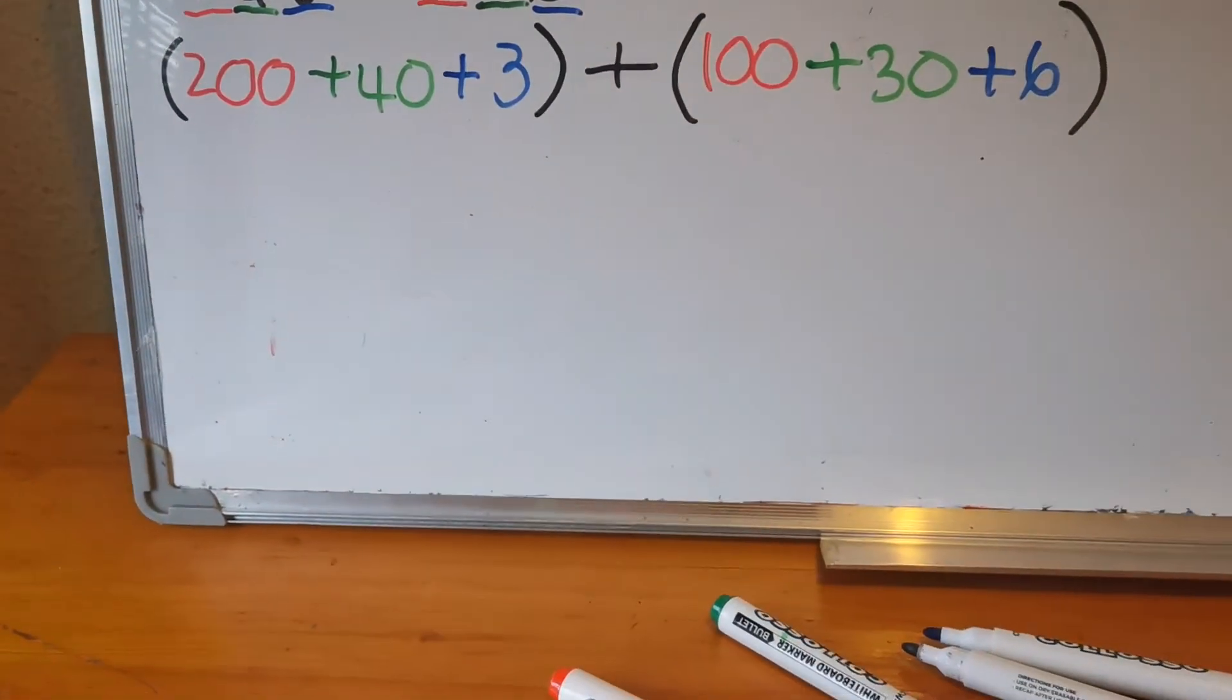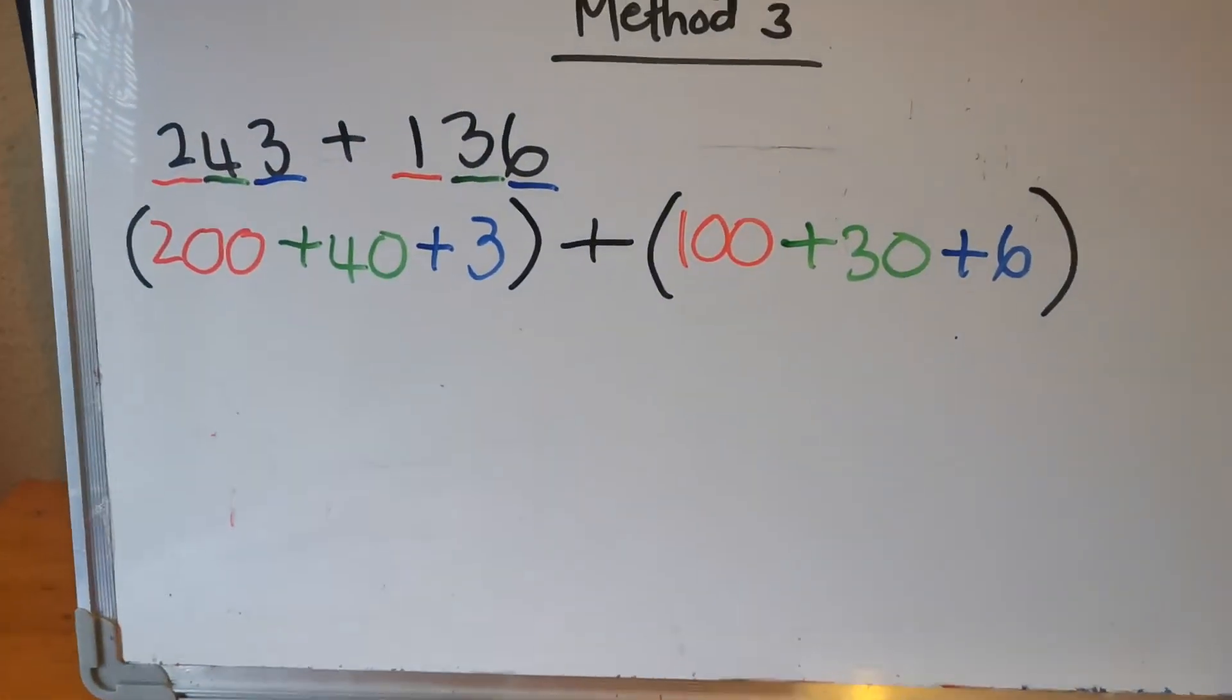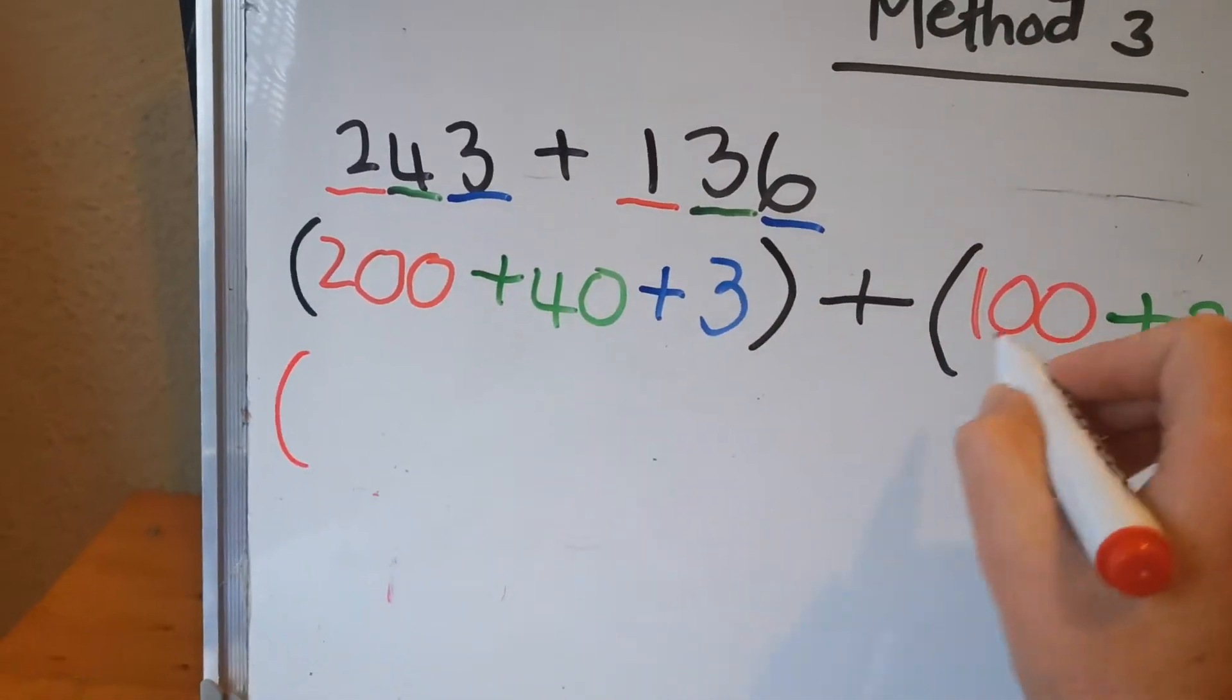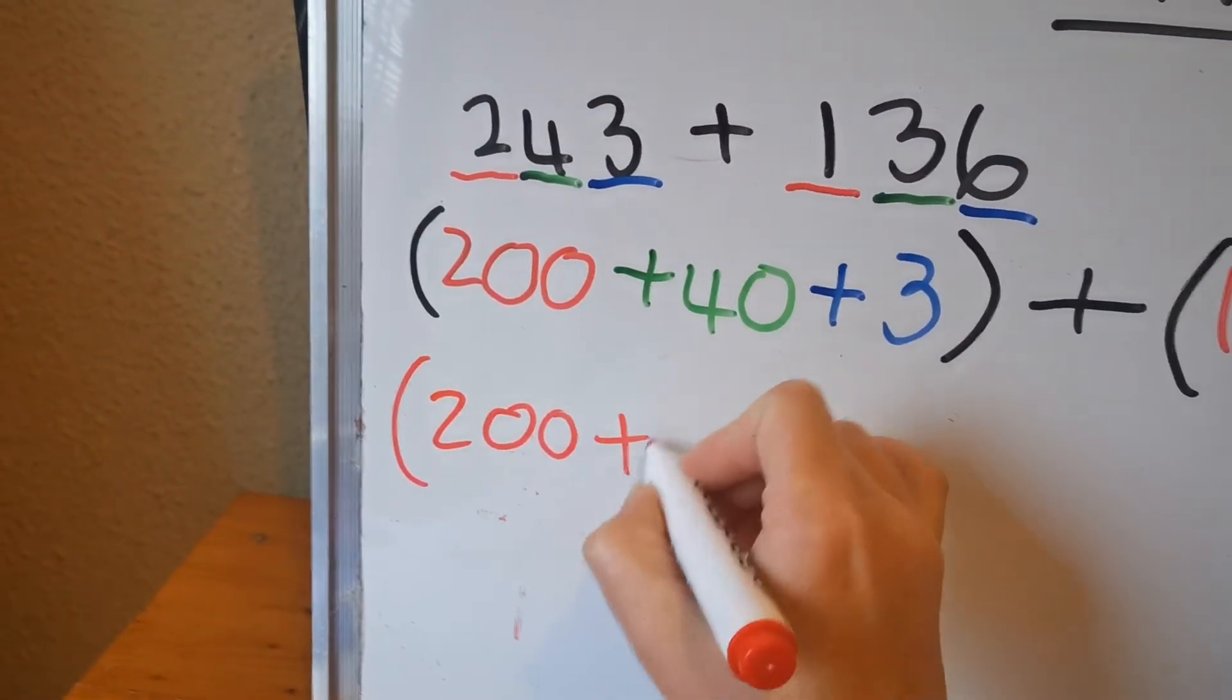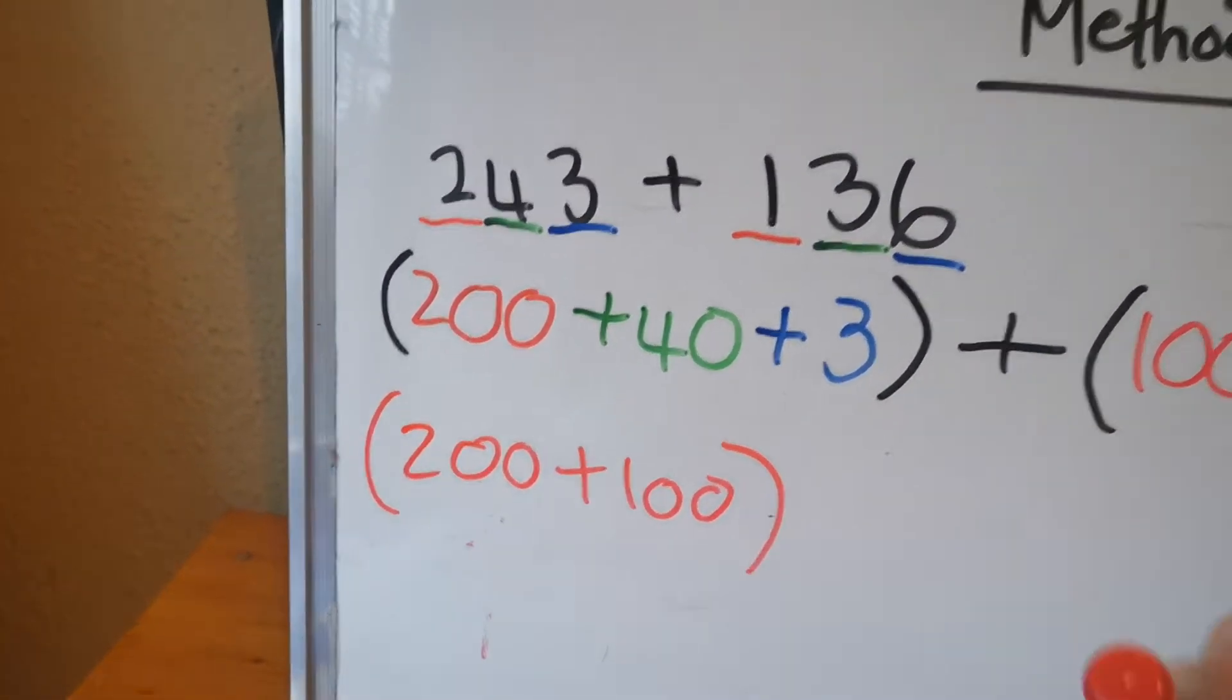Now you're going to group the hundreds together. So you're going to make a bracket and you're going to write the two hundreds together. So it's going to be 200 plus 100.